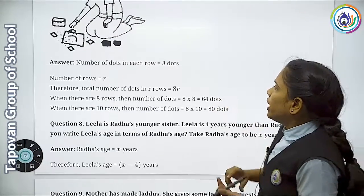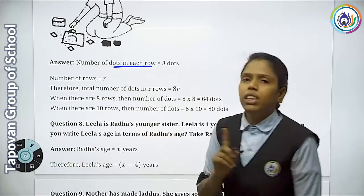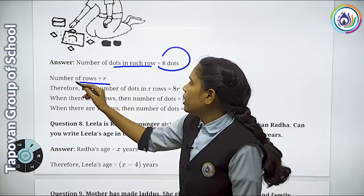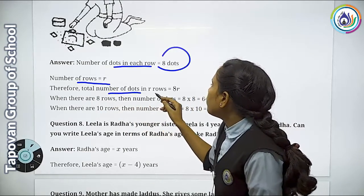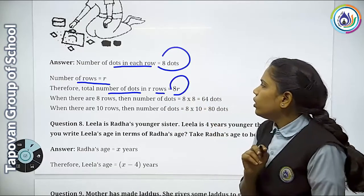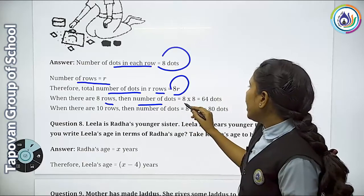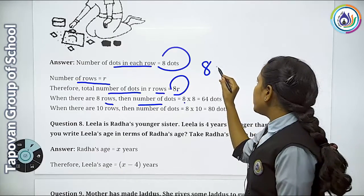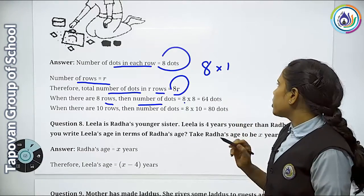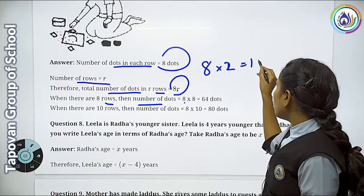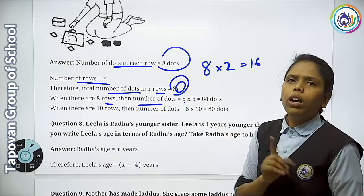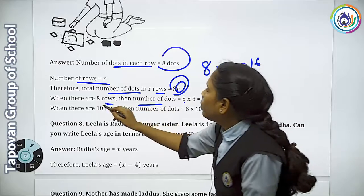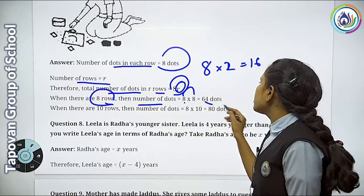So let's start. Number of dots in 1 row given in the question: 8 dots per row. Number of rows = R. Therefore, dots in R rows = 8 × R = 8R. When there are 8 rows, then the number of dots = 8 × 8 = 64 dots. Our formula is 8R — if 1 row, then 8 ones = 8; if 2 rows, then 16 dots. So R means number of rows. So 8 × R. For 8 rows: 8 eights = 64 dots.